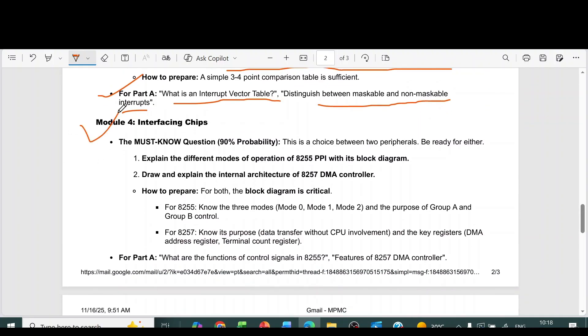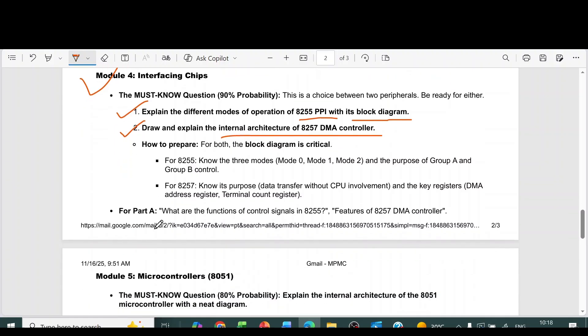Module 4, interfacing chips. First question, explain the different modes of operation of 8255 PPI with its block diagram. Second, draw and explain the internal architecture of 8257 DMA controller. Part A questions, what are the functions of control signals in 8255, features of 8257 DMA controller.